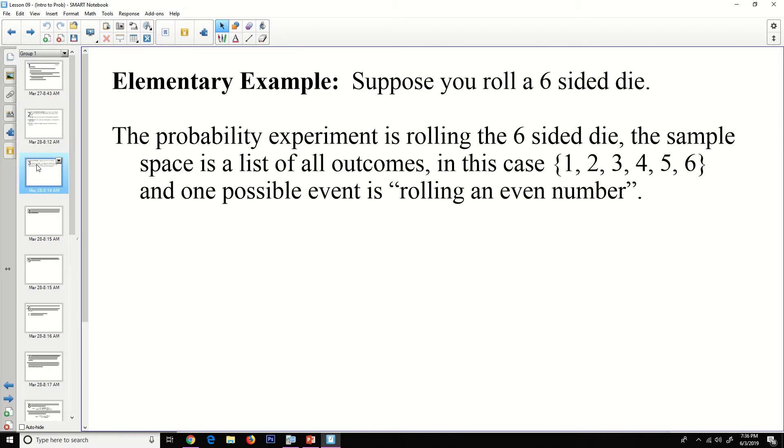An elementary example: suppose you throw a six-sided die. The probability experiment is rolling the six-sided die. That probability experiment has a sample space of six outcomes: one, two, three, four, five, and six. A possible event is rolling an even number. An even number is a subset of the sample space, in this case two, four, and six.